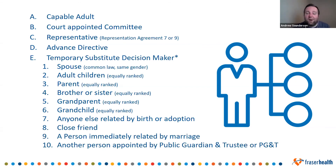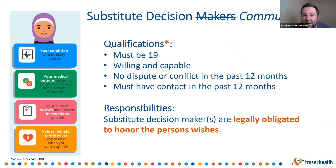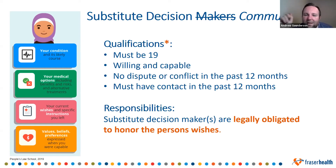That's a lot of information — so deep breath. To be a temporary substitute decision maker in BC, you need to be 19 years of age — the age of consent in BC. They need to be willing, so they need to want to do it and can decline. They need to be capable. There needs to be no conflict or dispute in the last 12 months, because that means they might not honor your wishes. And they need to have contact within the last 12 months so they even know what your wishes are. My favorite part of BC law is that substitute decision makers are legally obligated to honor the person's wishes — all the more reason for people to know what your wishes are.